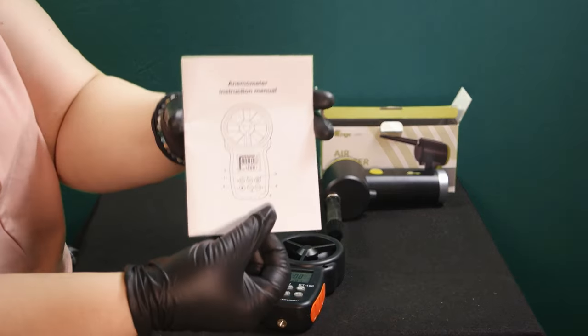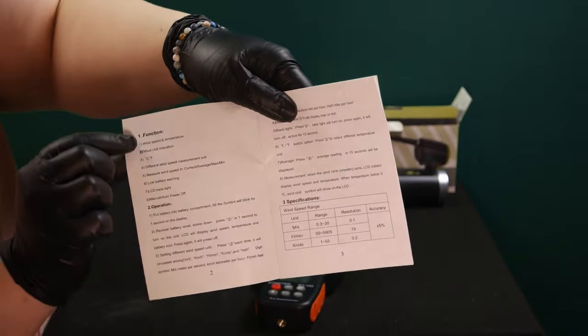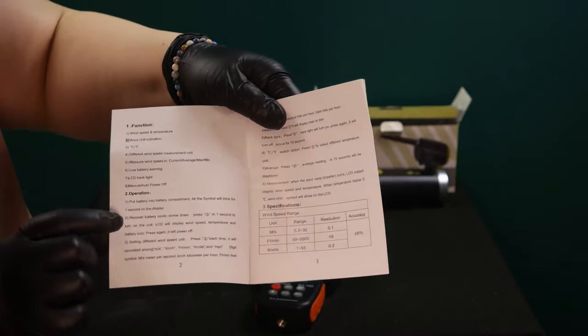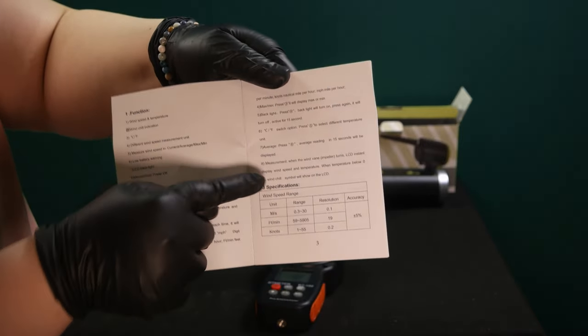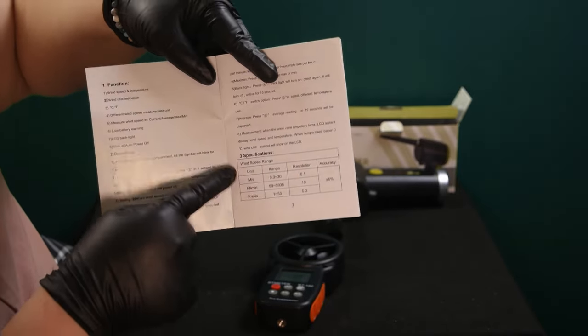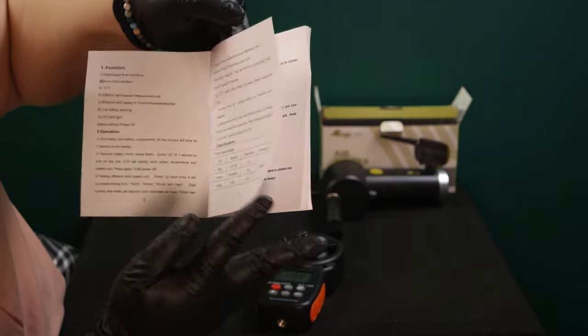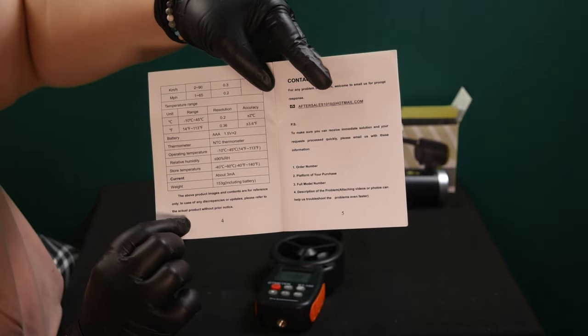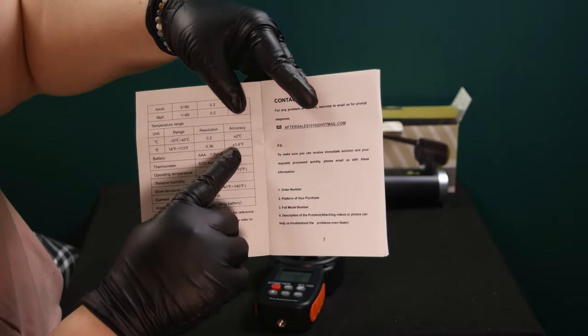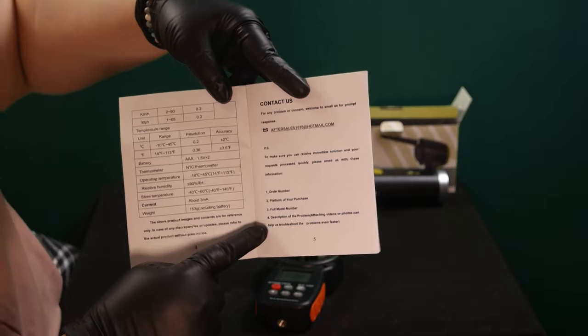For your instruction manual, there's the front. And then the first page, you have all the function of all the buttons. It does kind of explain, but not entirely. Then you have operation, more operation instructions here. And then these are your specifications. The accuracy for all the different types of units they have are accurate within 5%. Your temperature range, depending on Celsius or Fahrenheit, Celsius is accurate within 2 degrees and Fahrenheit is accurate within 3.6 degrees.